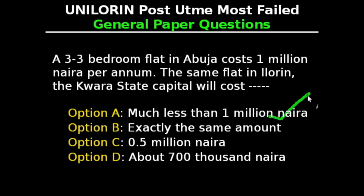This is because of the location of the flat. Abuja is the federal capital territory, and so it is a very well recognized and important part of the country. Things are expected to be much costlier there.